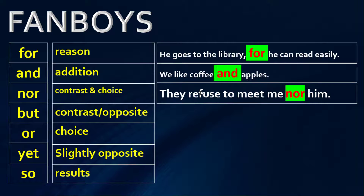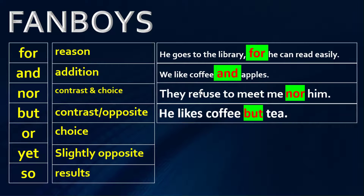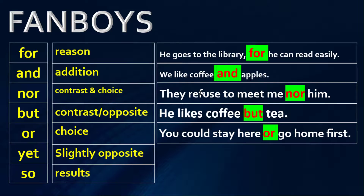For 'nor,' we use it to show contrast: 'They refuse to meet me, nor him,' meaning they don't want to meet me or him. For 'but,' we use it for contrast: 'He likes coffee but not tea.' For 'or,' we use it to talk about choice: 'You could stay here or go home first.' This presents a choice — you can stay here or go home first, it's up to you.